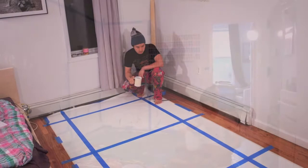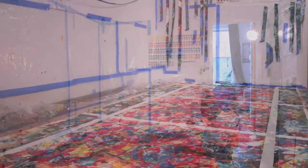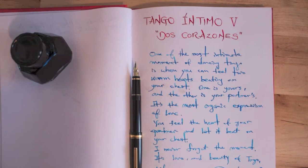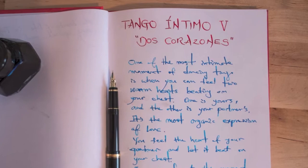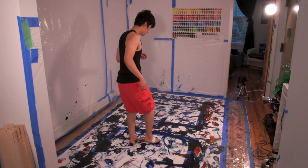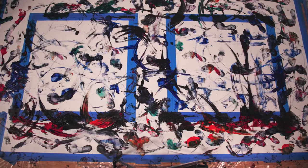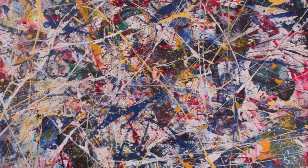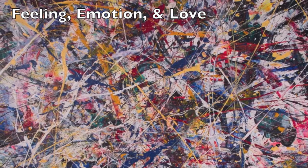My Tango Intimo painting is about beautiful relationships. I choose a theme. For example, my Tango Intimo 5 painting is about two hearts — Spanish 'Dos Corazones' — which means when you dance tango, when you feel great connection with your partner, you feel that your partner's heart is beating on your chest. And that is absolutely amazing and organic expression of your feeling, emotion, and love.